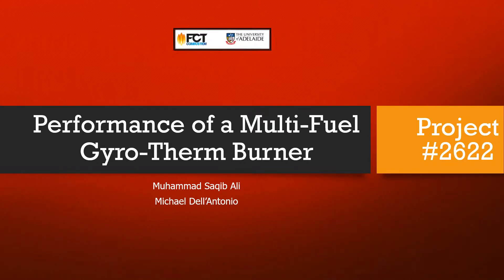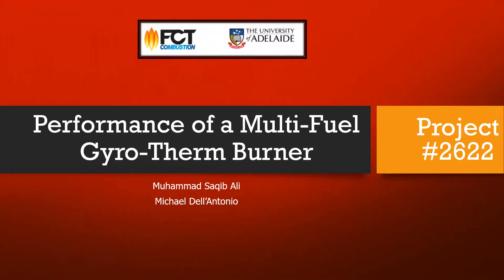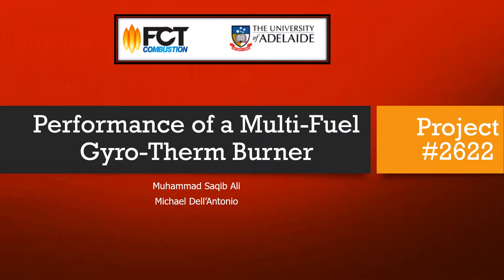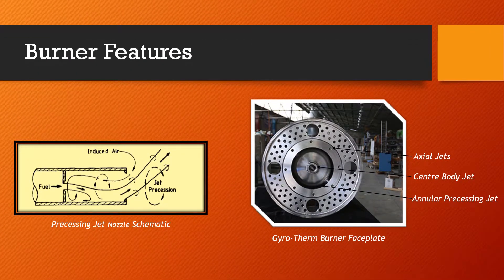This project focuses on the development of FCT Combustion's Multi-Fuel Gyarotham Burner. The Gyarotham burner is a kiln burner used to provide the required heat for calcifying materials in a rotary kiln. The burner utilizes precessing jets to impart an unstable turbulent flow on the fuel stream, resulting in a shorter and highly luminous flame.